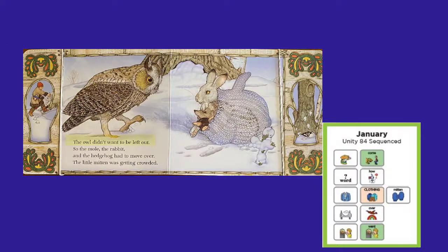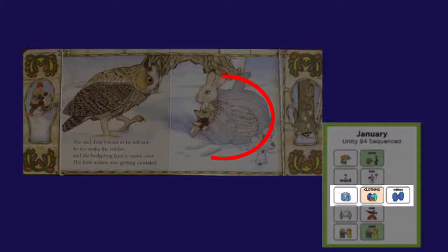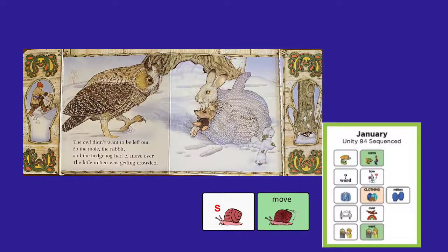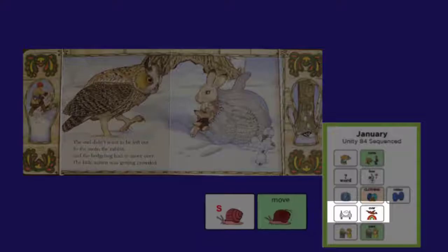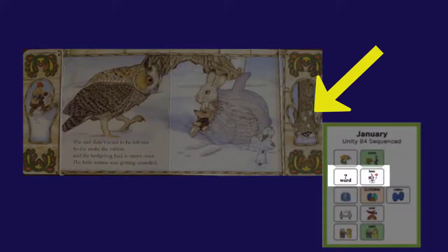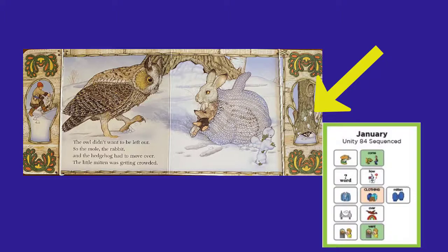The owl didn't want to be left out, so the mole, the rabbit, and the hedgehog had to move over. The little mitten was getting crowded. But the owl did not want to be left out, so they had to move over to let him in. How many animals can fit in that mitten? What do you think that is peeking out from underneath that tree?